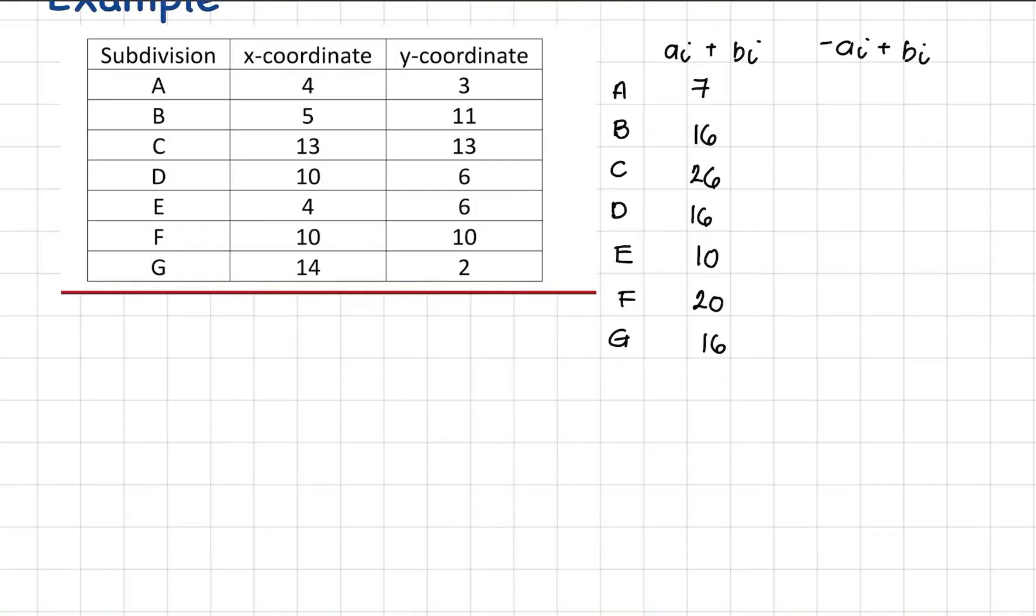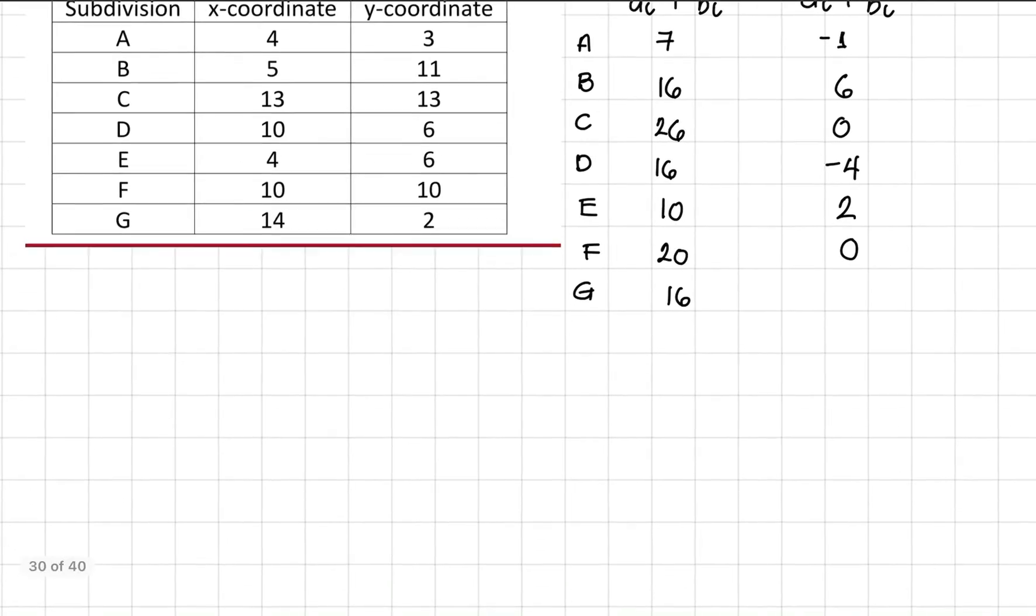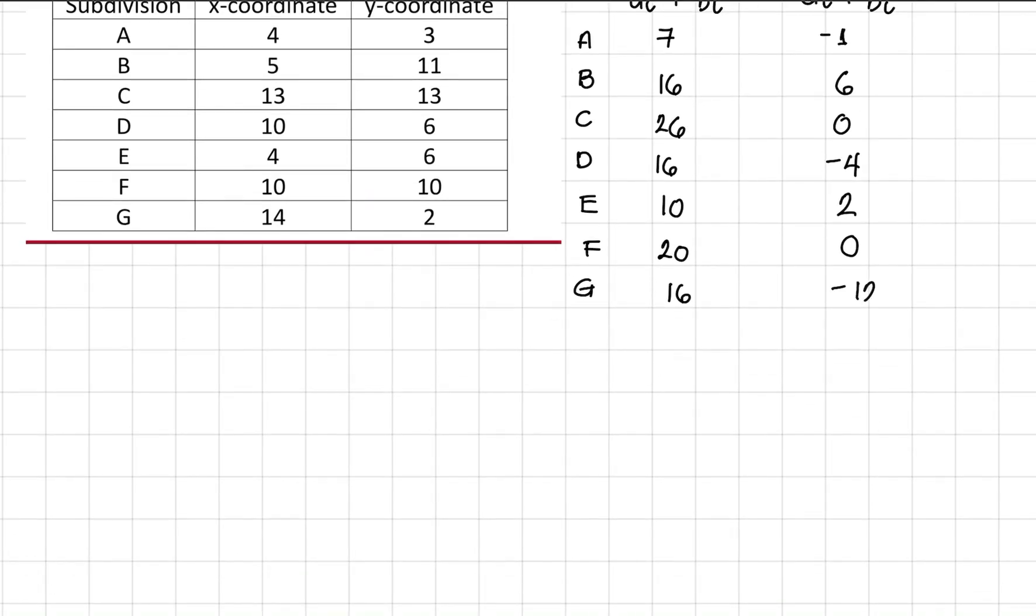And then for the second column, negative A plus B. Negative 4 plus 3, this will be negative 1. Next is negative 5 plus 11, so that is 6. Negative 13 plus 13, so that is 0. For letter D, negative 10 plus 6, that's negative 4. E is negative 4 plus 6, so that is 2. Negative 10 plus 10 is again 0. And then negative 14 plus 2 is negative 12.